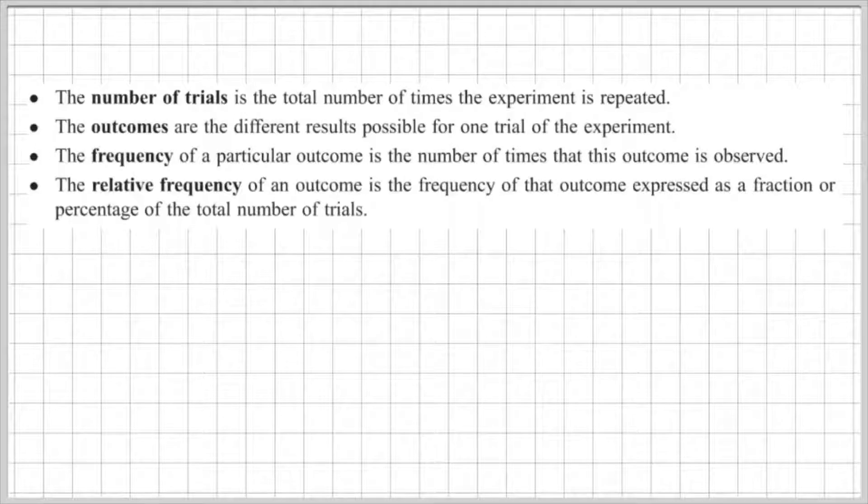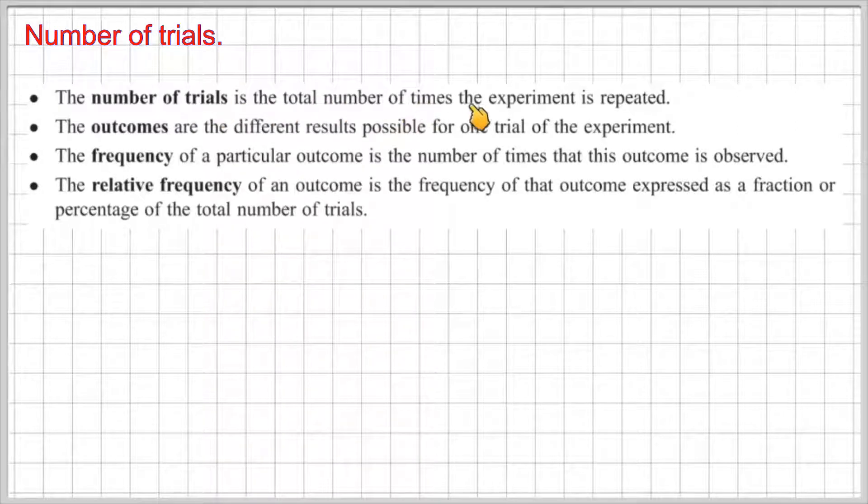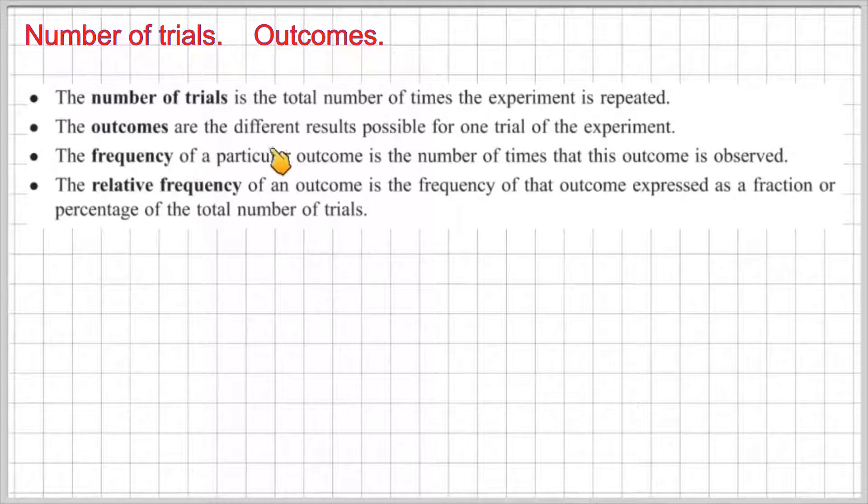Okay, so in experiments involving chance, we use the following terms to describe what we're doing and the results we're obtaining. The number of trials is the total number of times the experiment is repeated. The outcomes are the different results possible for one trial of the experiment.